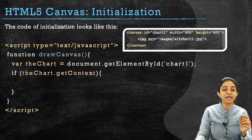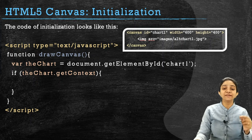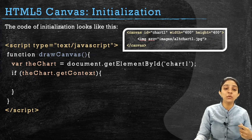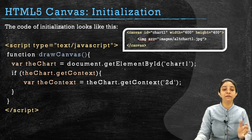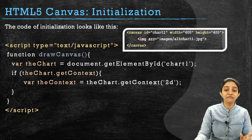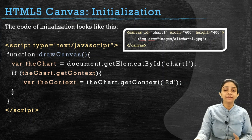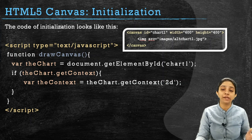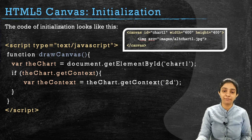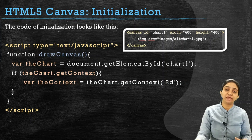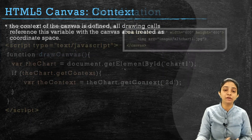We are testing a condition inside an if statement: if theChart.getContext — if this value is true, that means the canvas is ready to accept some context. That context is specified by the variable 'theContext'. We declare another variable with the 'var' keyword: var theContext, which is equal to theChart.getContext('2d'). We use '2d' as the parameter to draw 2D shapes and 2D charting primitives. If you wish to draw 3D shapes, you pass '3d' as the argument. Here, we will see an example of a 2D shape.